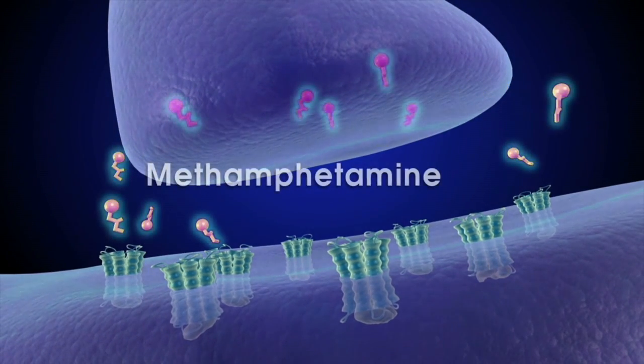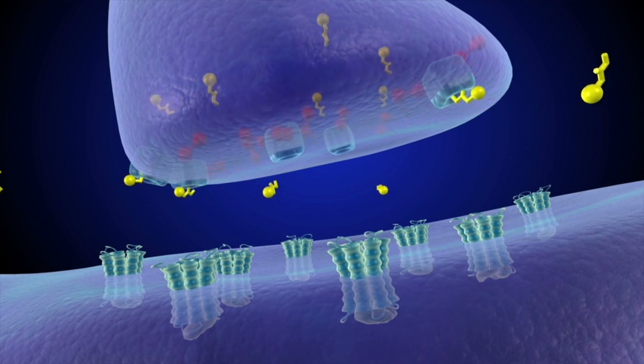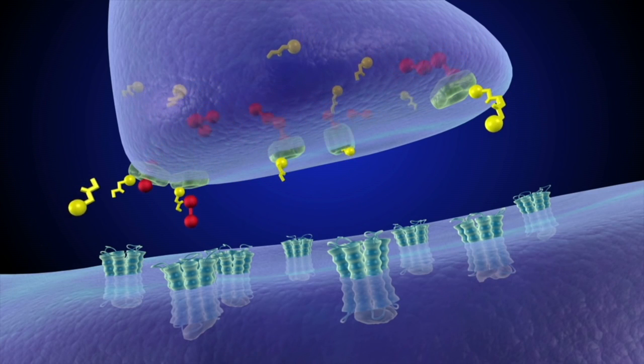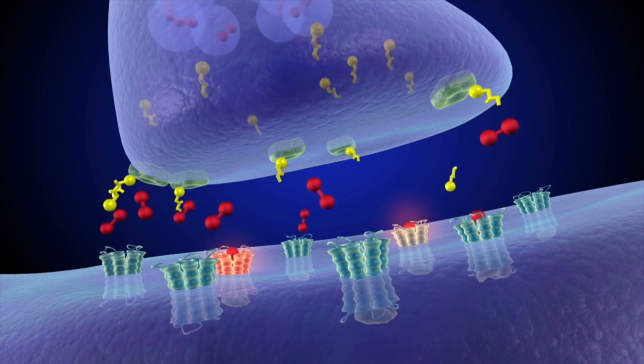When someone first uses methamphetamine, the drug quickly enters the brain. At low doses, meth blocks the re-entry of dopamine into the presynaptic cell, just like cocaine does.